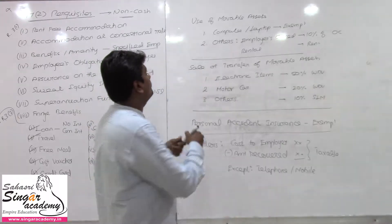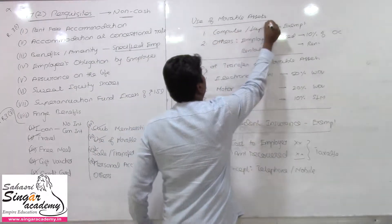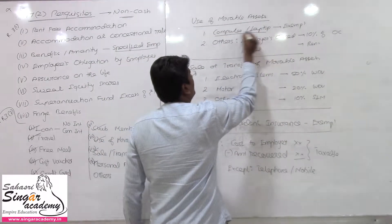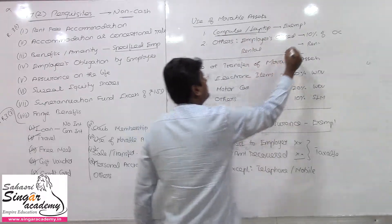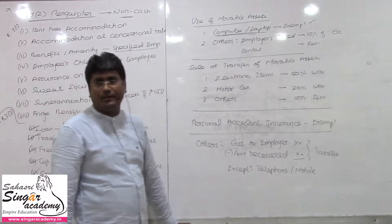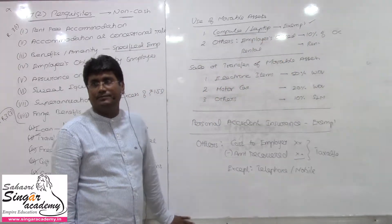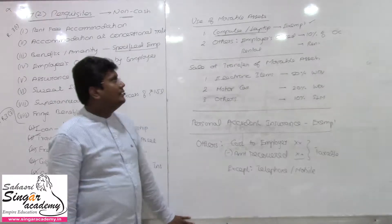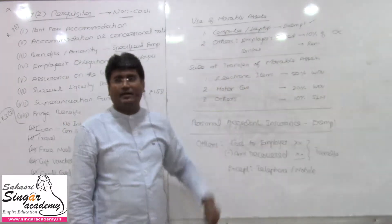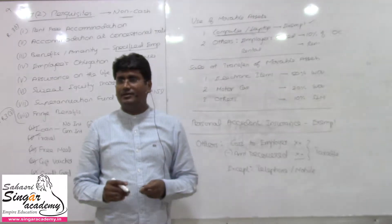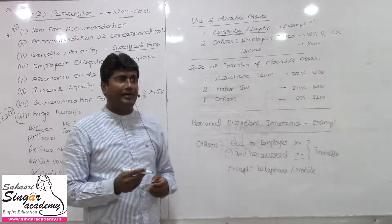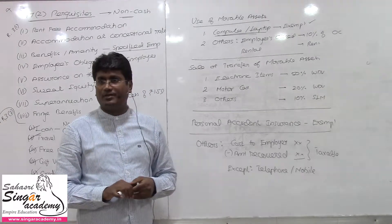Use of mobile assets: computer and laptop are completely exempt. Other mobile assets like car, fridge, music players — when used by the employee for personal use by the employer's provision.